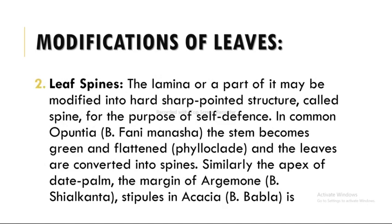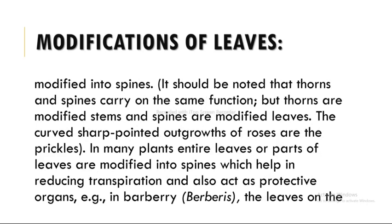The next modification is leaf spines. The lamina or a part of it may be modified into hard, sharp-pointed structures known as spines for the purpose of self-defense. In Opuntia, the stem becomes green and flattened (phylloclade) and the leaves are converted into spines. Similarly, the apex of the date palm and the margin of Argemone (shealkanta), the stipules in Acacia (babla) are modified into spines. It should be noted that thorns and spines carry on the same function but thorns are modified stems and spines are modified leaves.